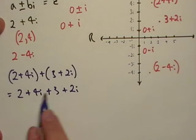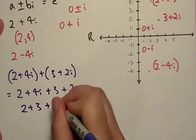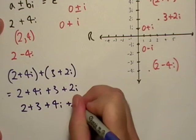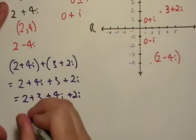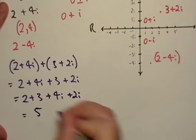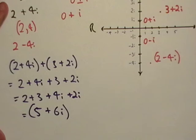Now, treating this like a variable, I'll just group my terms. So I'll go 2 plus 3 plus 4i plus 2i. And that one right there, that would be equal to 5 plus 6i. So that would be my complex number.